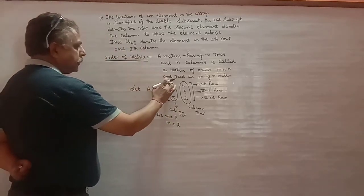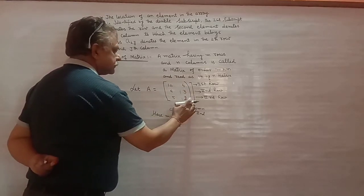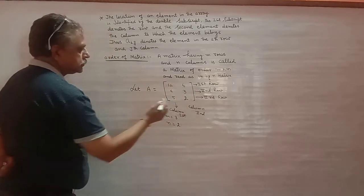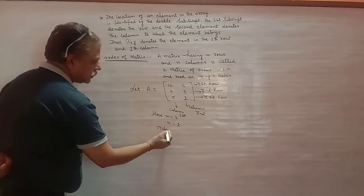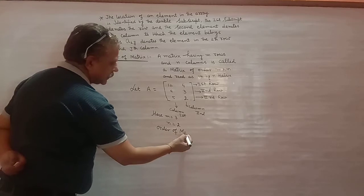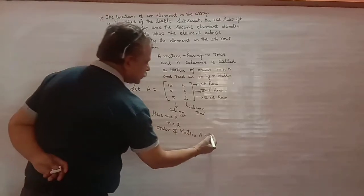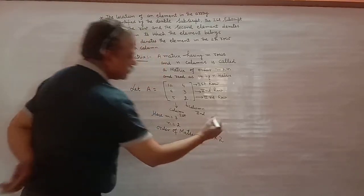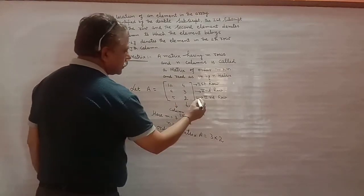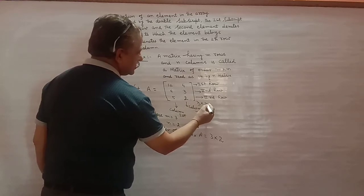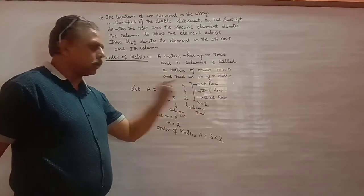तो इस matrix का order क्या हो गया? Therefore, order of matrix A is equal to 3 cross 2. और हम इसको matrix के साथ ऐसे लिखते हैं: 3 cross 2. इसका मतलब तीन row हैं और दो column हैं।